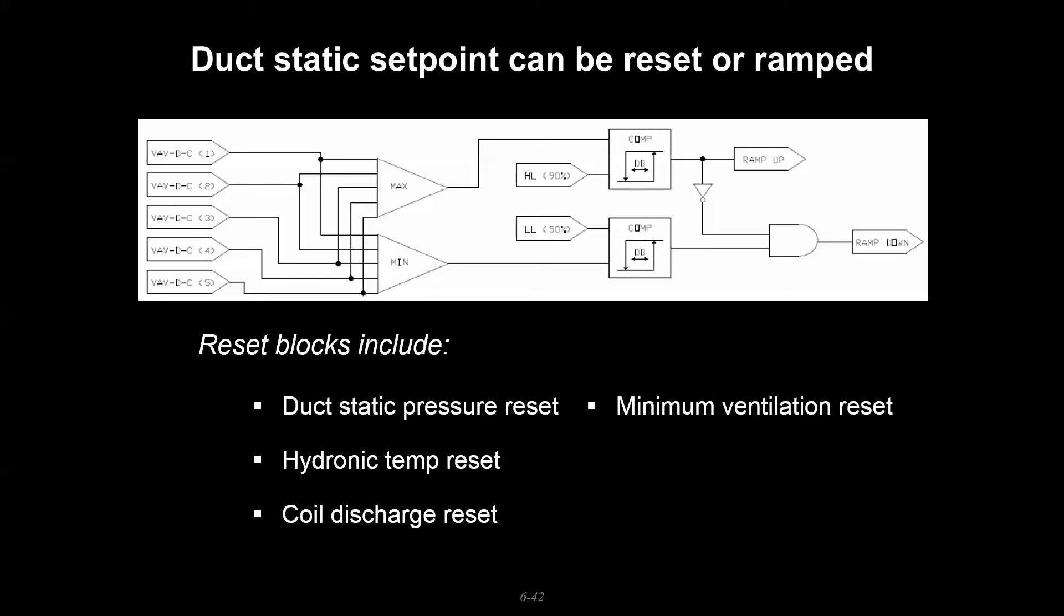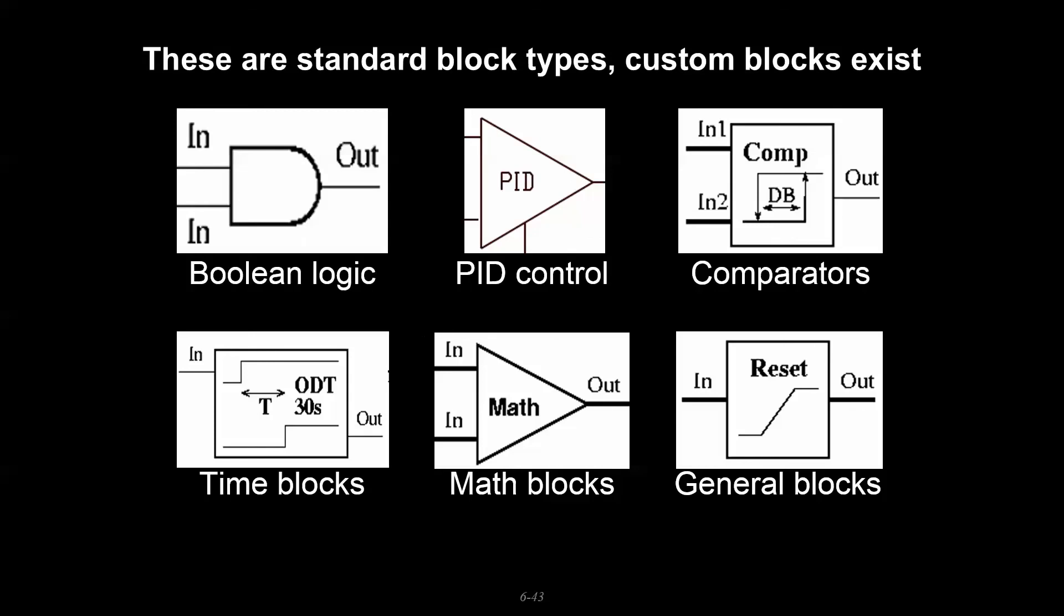That can be done with minimum ventilation, resetting that off some proxy for how occupied a space would be - either CO2 or some type of motion detector data. Pump pressure, which is very similar to duct static but on the hydronic side. These are some of the main block categories we're going to work with. What we're going to do in the next couple videos is show how we can use these blocks to start assembling our HVAC sequences of operation in a way that will help us understand how these systems work.